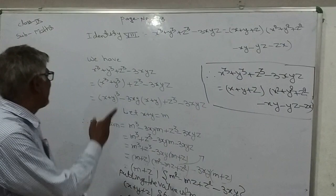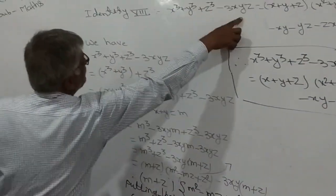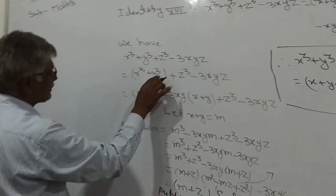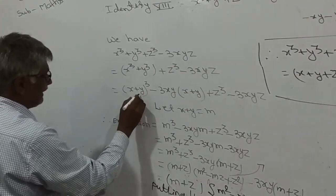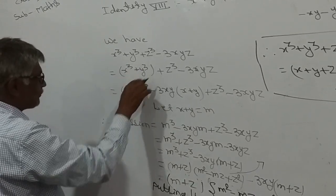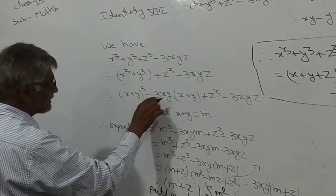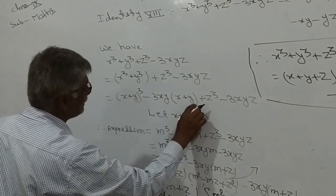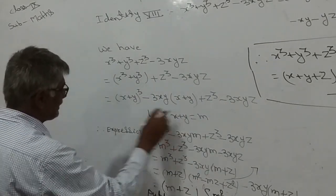We have x³ + y³ + z³ − 3xyz. We have x³ + y³ + z³ − 3xyz. We can write x³ + y³ equals (x + y)³ − 3xy(x + y). We have to add z³ − 3xyz. Let x + y equal to m.